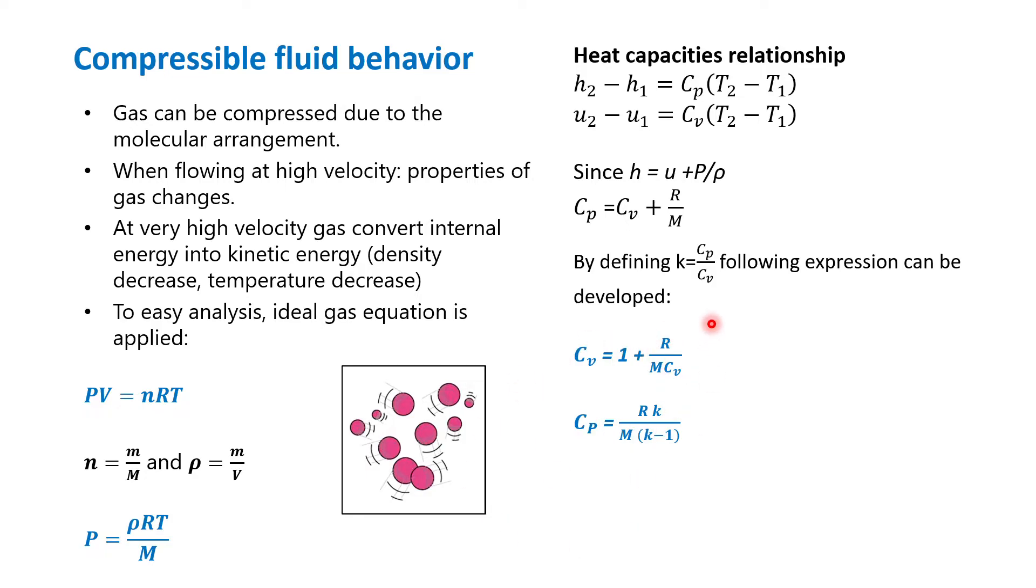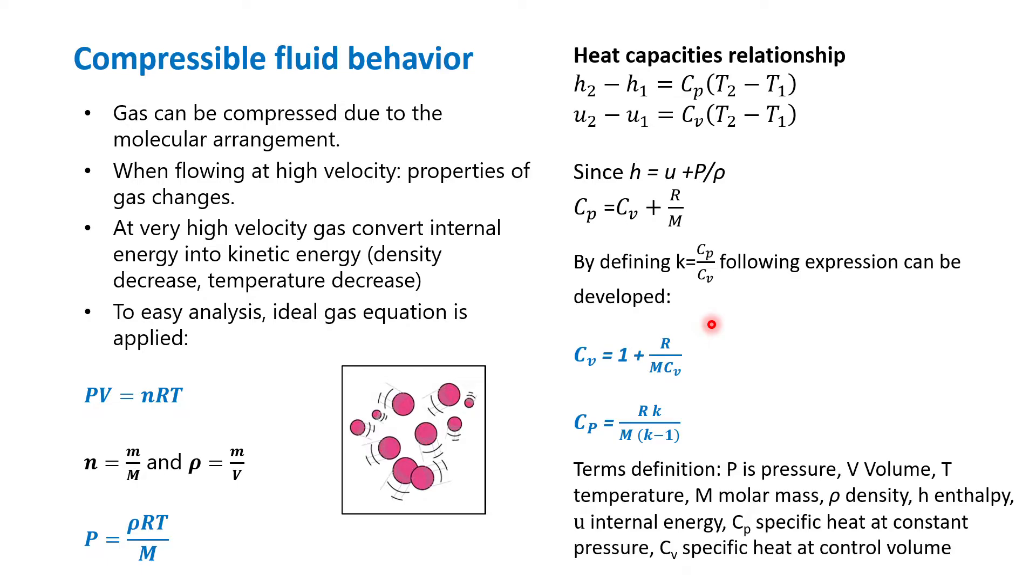This expression is very important to be used when we derive the equation later on. Here I list down the definitions: P stands for pressure, V volume, T temperature, M is the molar mass, rho is density, H is enthalpy, U is internal energy, Cp is specific heat at constant pressure, and Cv is specific heat at constant volume. I want to highlight the importance of R here. In another book, the universal gas constant will be defined differently.